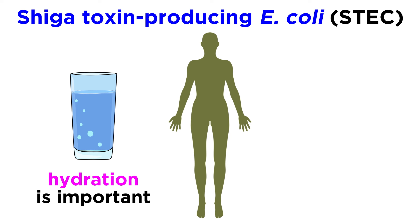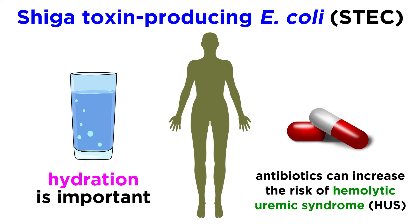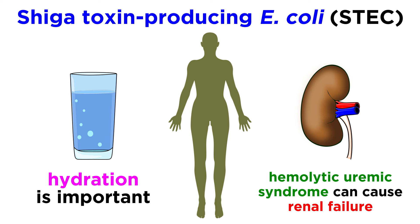Hydration is the most important treatment, as antibiotics are not typically prescribed for this kind of infection. In fact, antibiotics can make the illness worse, causing patients to be at higher risk for hemolytic uremic syndrome, or HUS. HUS is a complication for a small subset of patients that can cause renal failure and other deadly symptoms.